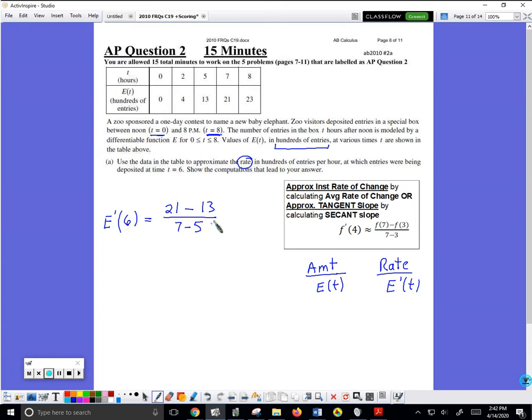You can stop here. Put down the units. This is hundreds of entries, and it's per hour. If you have that on your paper, they will give you one point.